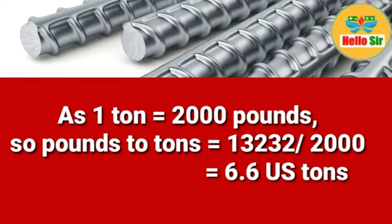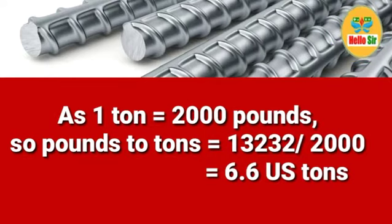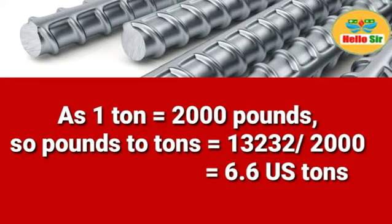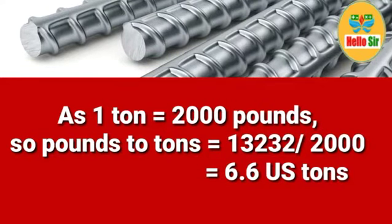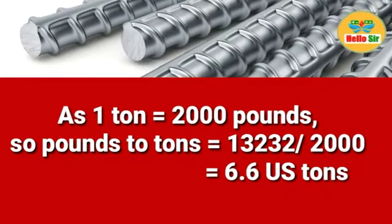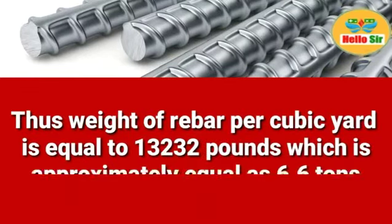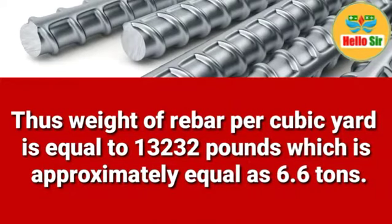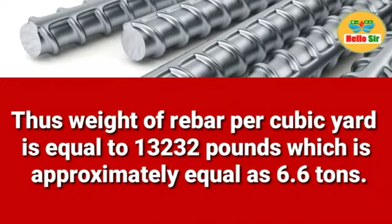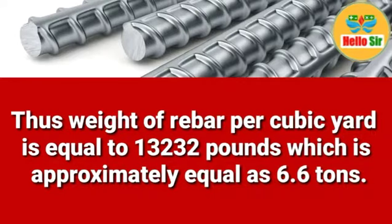Next, converting to tons: one US ton is equal to 2000 pounds. So dividing 13,232 by 2000, it comes out to 6.6 US tons. Thus, the weight of rebar per cubic yard is equal to 13,232 pounds, which is approximately equal to 6.6 tons.